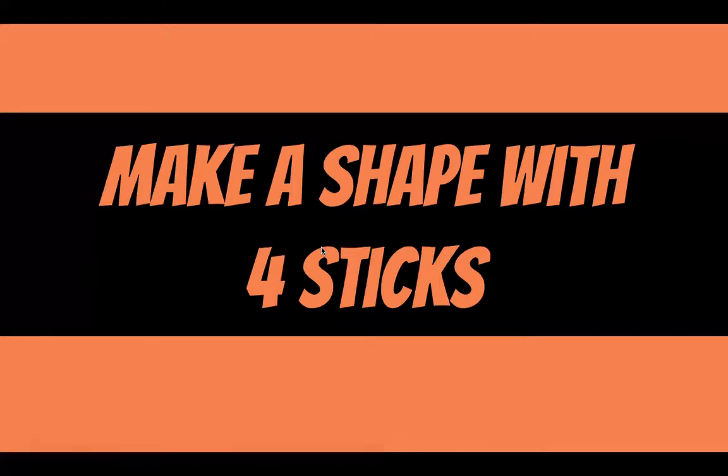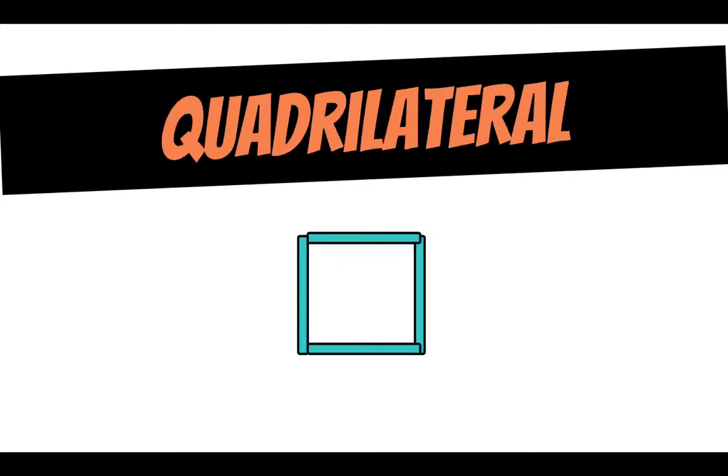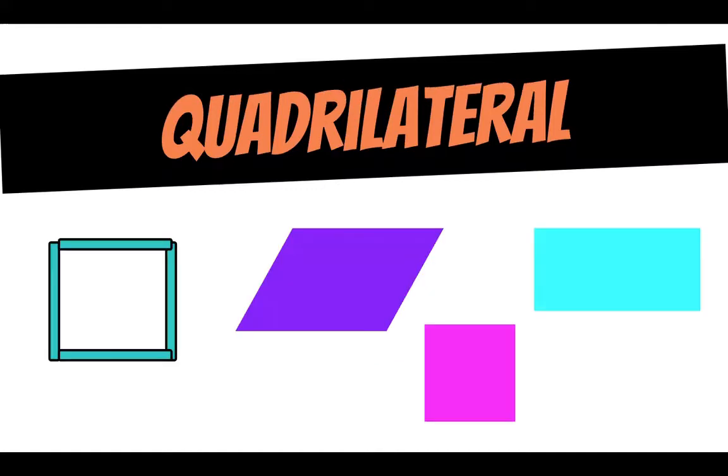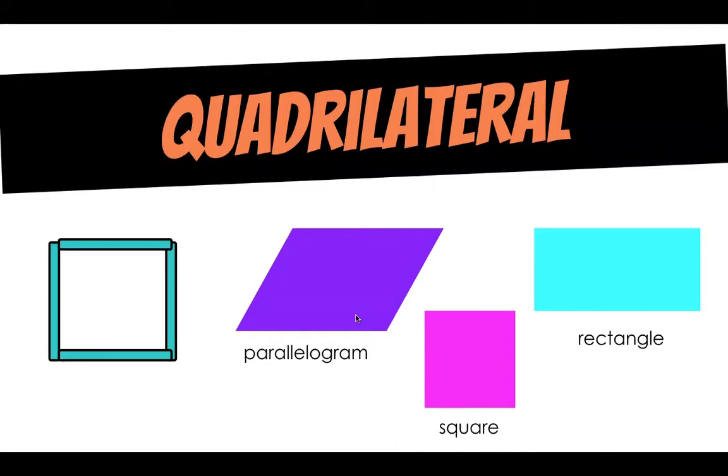Now I want you to make a shape with four sticks or pens or whatever tool you're using. What did you make? I made a quadrilateral. Now yours might look a little bit different than mine. These are all quadrilaterals. Or you might be thinking, Mrs. Bishop, you're saying the wrong name. Well, this is a square, this is a rectangle, this is a parallelogram. All of these are quadrilaterals. Let's learn more why.